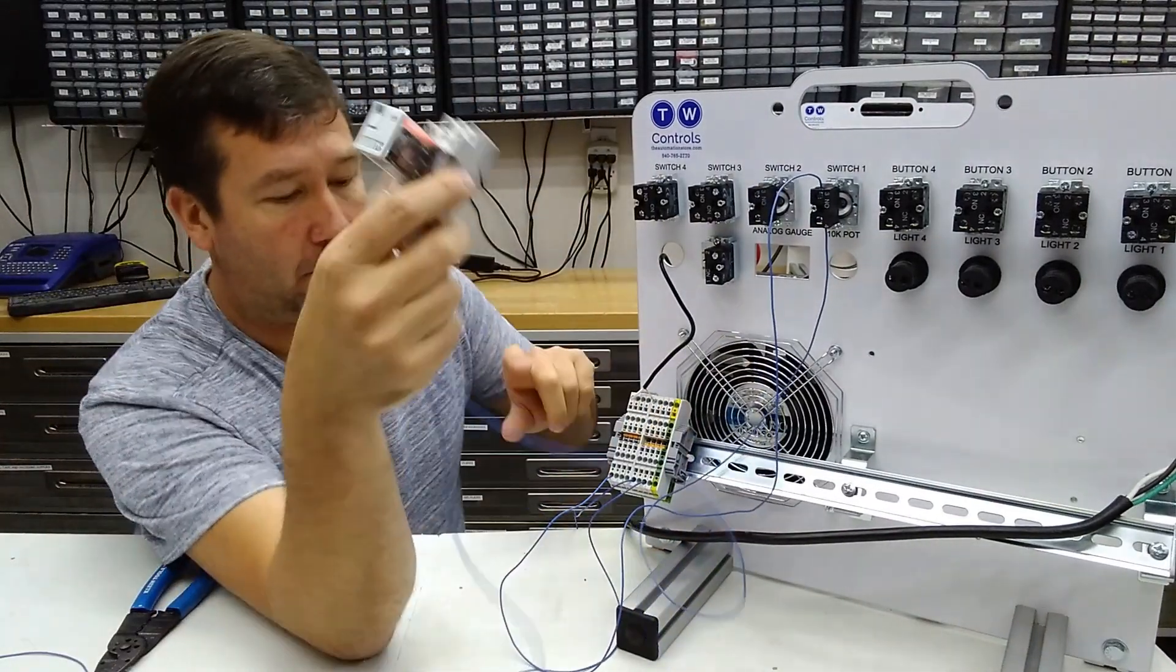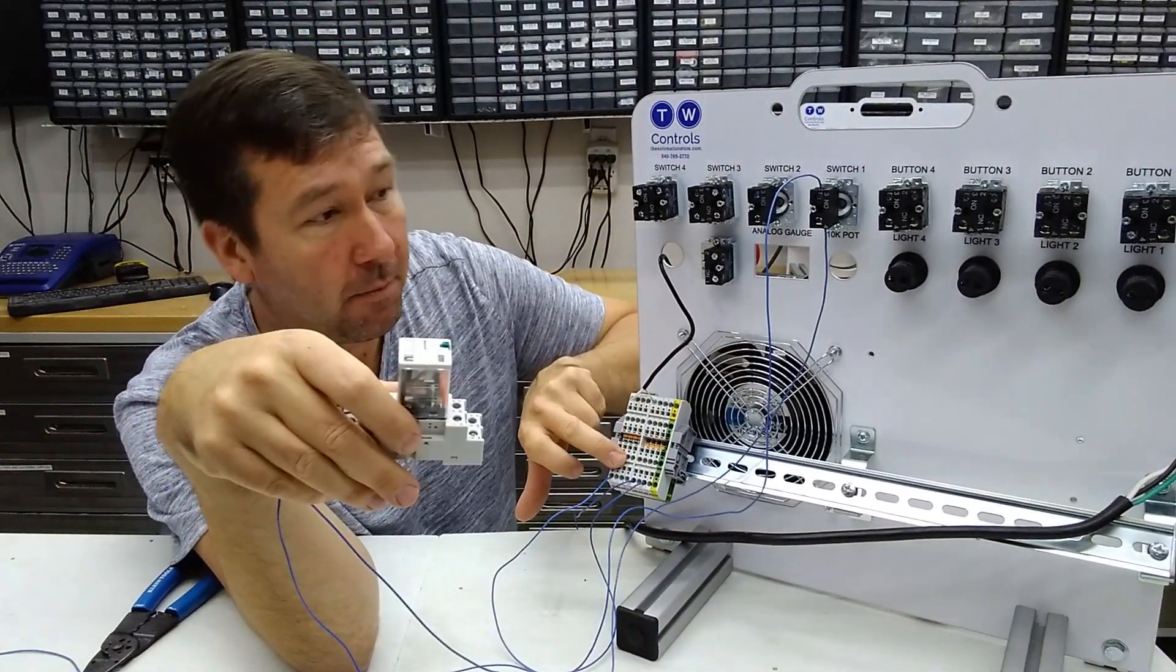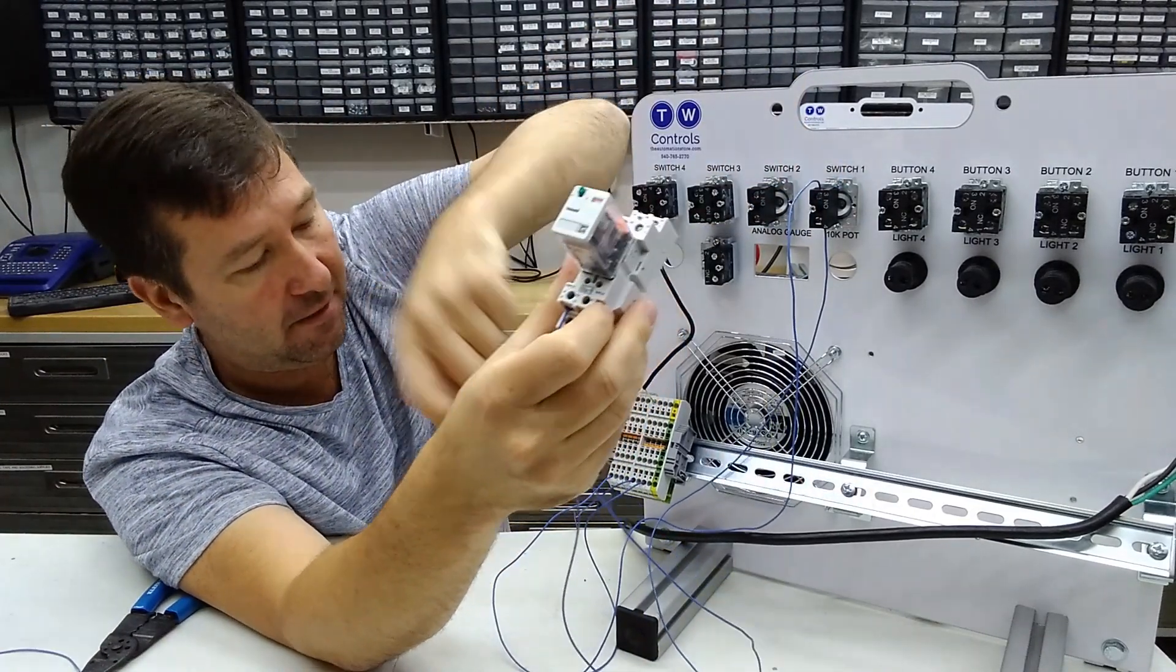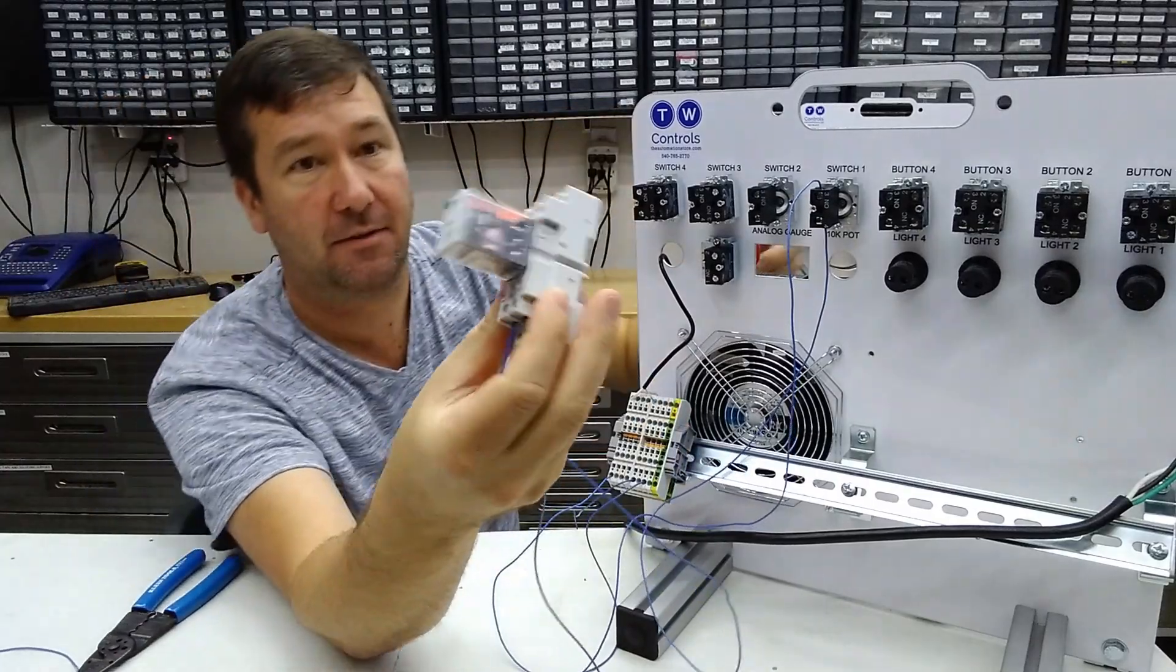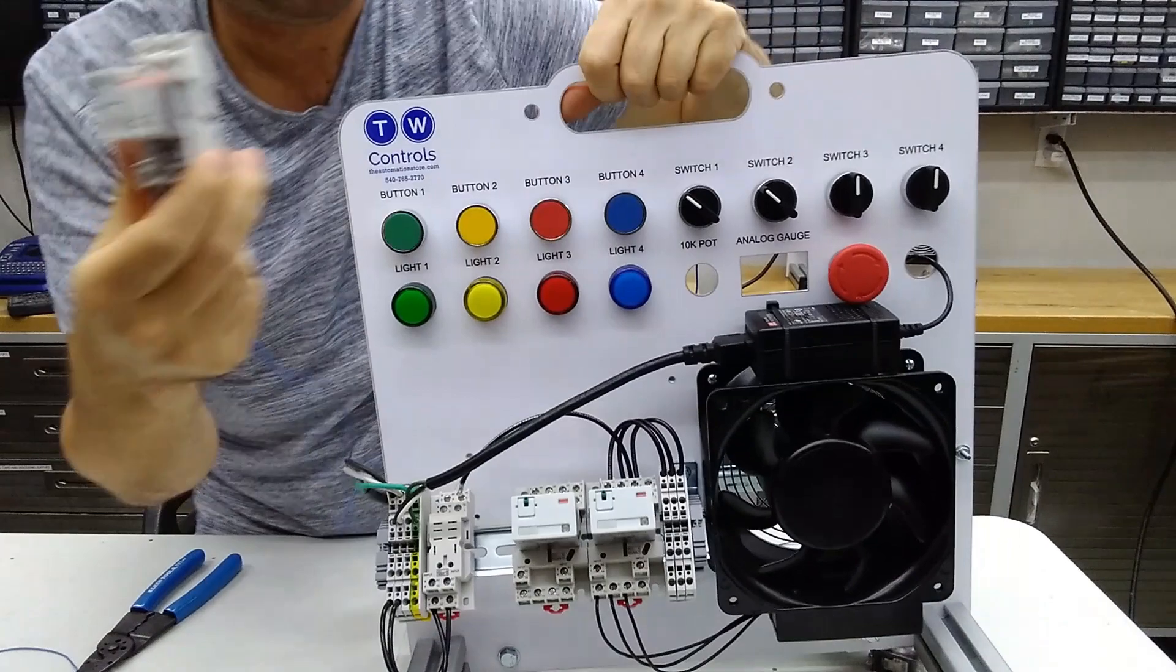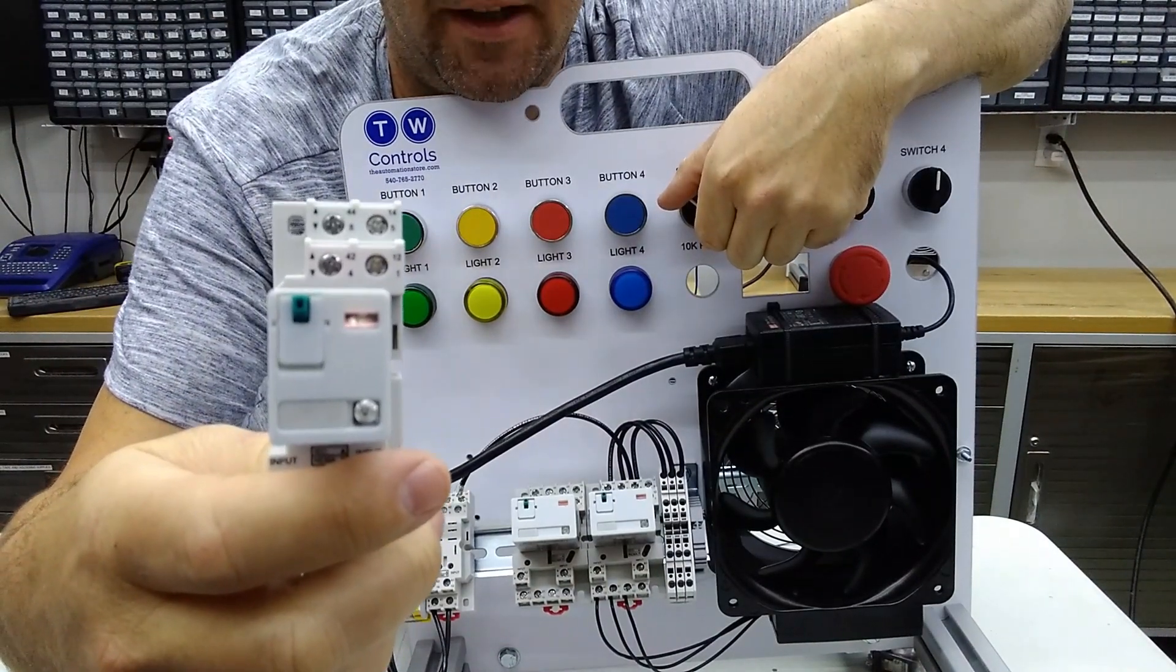All right, so now I have a wire coming from the plus of our power supply to our switch, from our switch to A2, and from A1 back to the minus of our switch. So now we'll flip this around. When we switch switch one, you'll see this relay pull in.